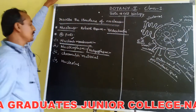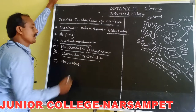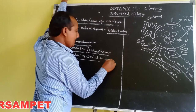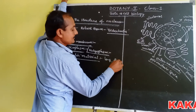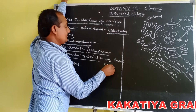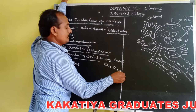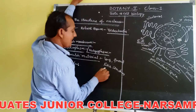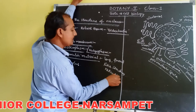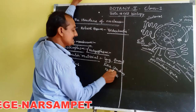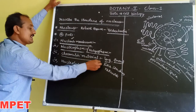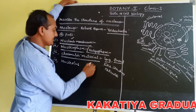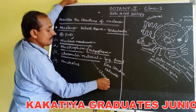Third part is chromatin material. Chromatin material refers to long, fine thread-like structures present in the nucleoplasm. This chromatin material is condensed to form chromosomes.